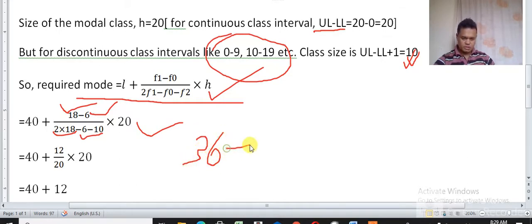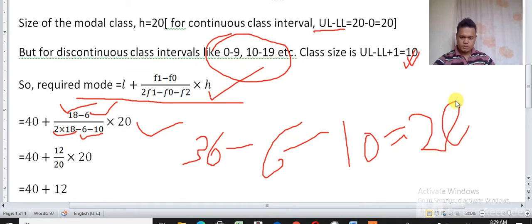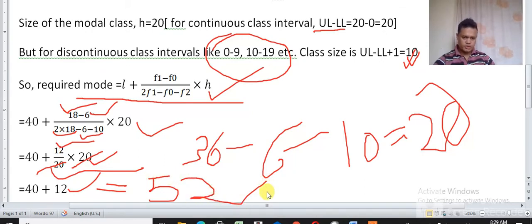36 minus 6 minus 10. So 36 minus 6 is 30 minus 10 is 20. And 18 minus 6 is 12. This 20 and this 20 will be cancelled, so what remains: 40 + 12 = 52. So required mode is 52.